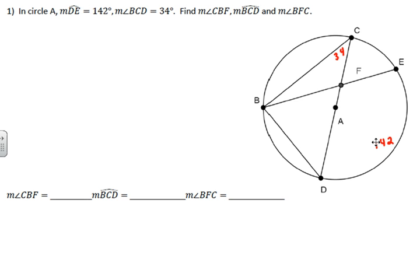Now we need to use things we know. The first thing I always look for are diameters, because diameters tell us things about 180 degree arcs. CD is a diameter because it goes through A, and it's circle A.